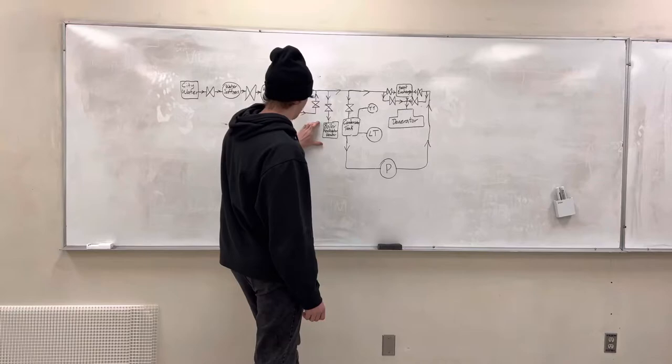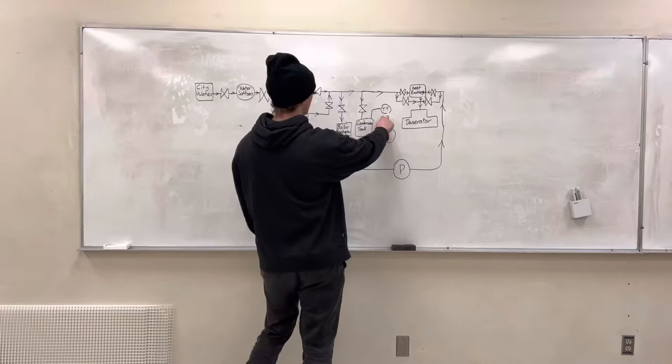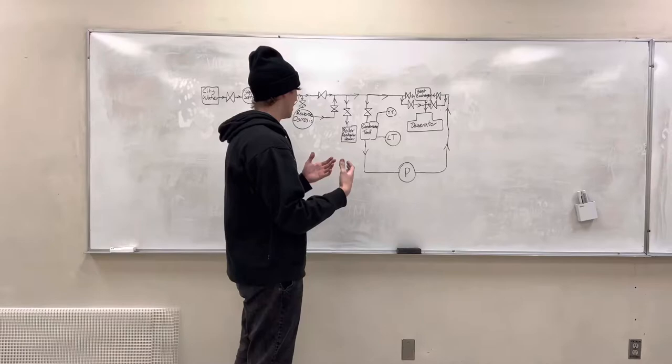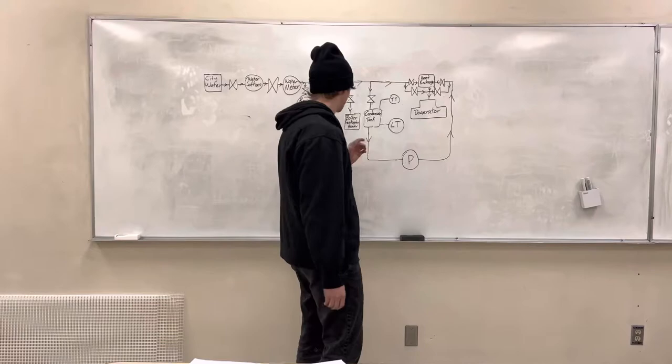Then it goes to the boiler feed water header and also to the condensate tank. The condensate tank has a temperature transmitter which indicates to the operator how hot it is, and it also has a level transmitter which tells the operator how much water level it has.